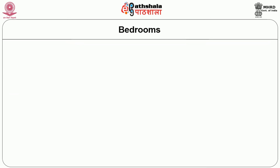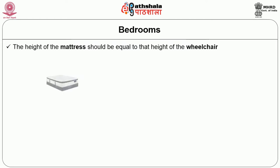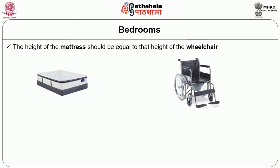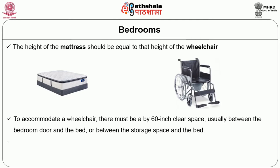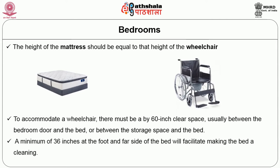Bedroom requirements: The height of the mattress should be equal to the height of the wheelchair. To accommodate a wheelchair, there must be a clear space of 60 inches — usually between the bedroom door and the bed, or between the storage space and the bed. A minimum of 36 inches at the foot and far side of the bed will facilitate making the bed and cleaning.